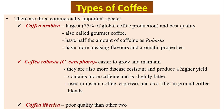Coffea canephora, also known as Robusta, is easier to grow and maintain. They are more disease resistant and produce a higher yield. It contains more caffeine and is slightly bitter. It is used in instant coffee, espresso coffee, and as a filler in ground coffee blends.